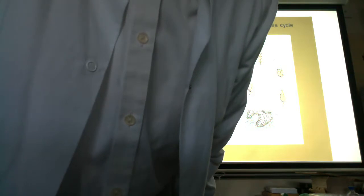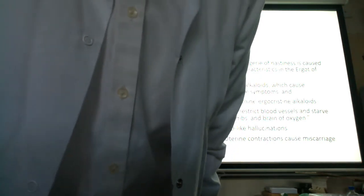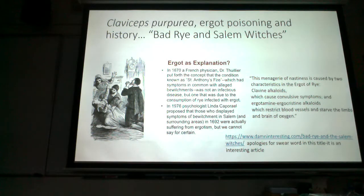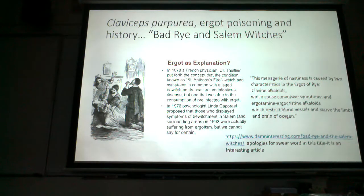In the United States we don't worry about it as much because grains have been selected for resistance to Claviceps, but in North America we still see the problem in livestock. Livestock fed moldy grain can develop ergotism — in cattle, their hooves can slough off and their tails can fall off from vasoconstriction. Even birds fed moldy grain can have their feet slough off.